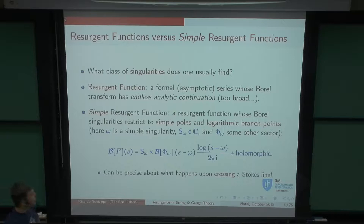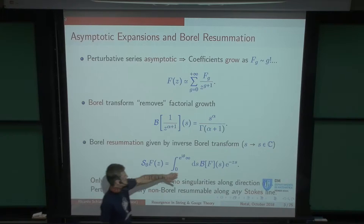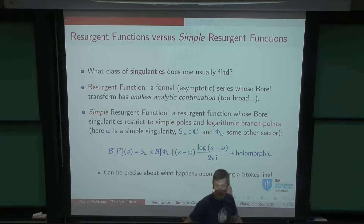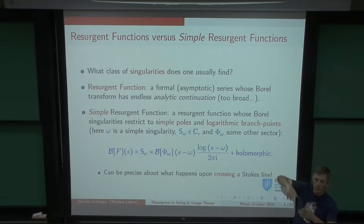If I have to worry about singularities, the question is: what kind of singularities can I have? Singularities have been classified, and this is where resurgence comes in. Generally, a resurgence function is a formal asymptotic series whose Borel transform has endless analytic continuation — basically anything you can think of goes, except if there are natural boundaries on the complex plane.